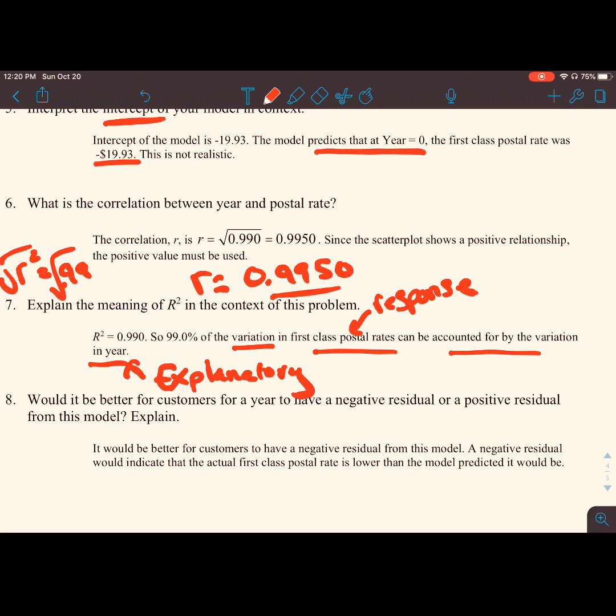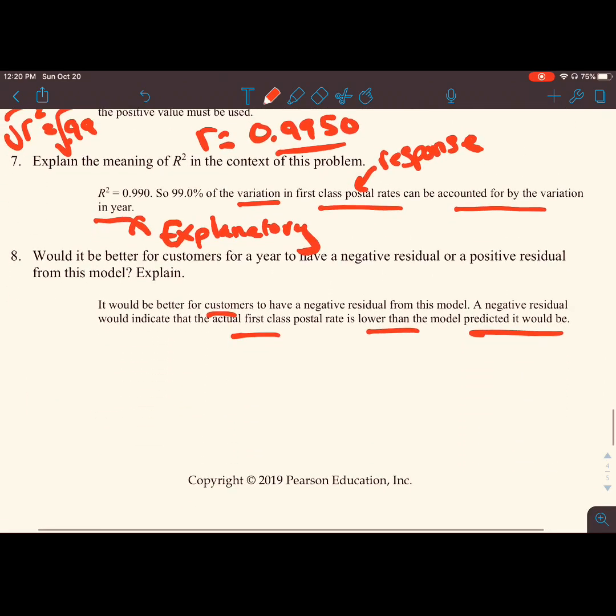Would it be better for customers for a year to have a negative residual or a positive residual from this model? In this model, if you have a negative residual, that means what you paid was lower than the predicted value. If you want to pay less than what the model predicts, that's a good thing for you. It would be better for customers to have a negative residual from this model. A negative residual would indicate that the actual first class postal rate is lower than the model predicted it would be.